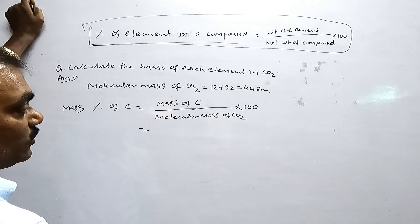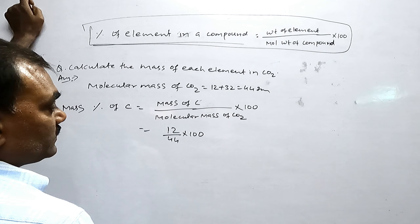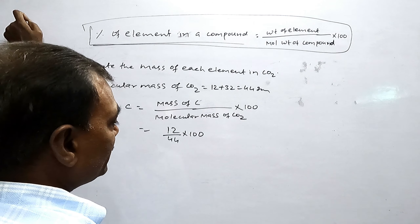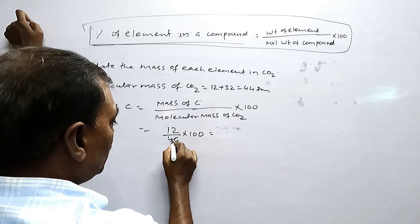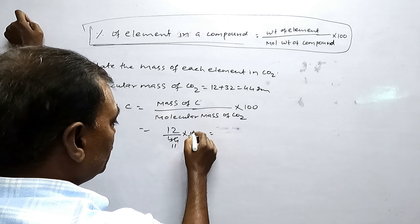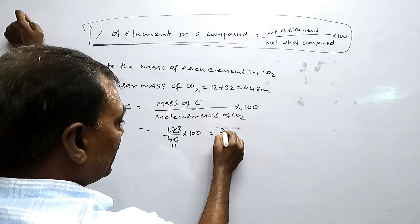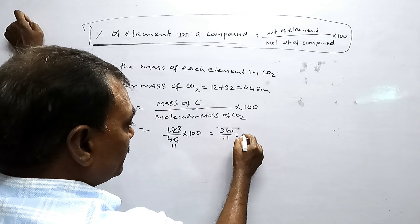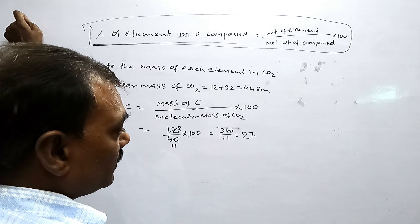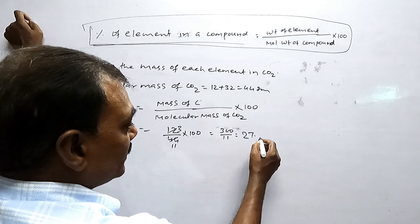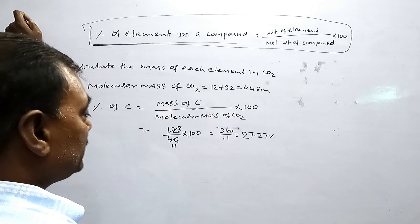Mass of carbon is 12. So 12 by 44 into 100 equals 27.27 percent.